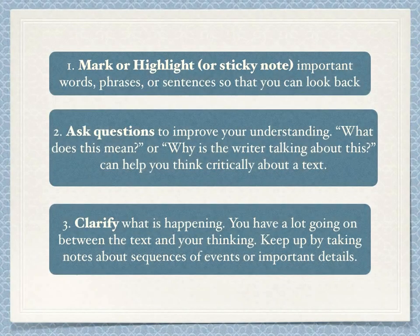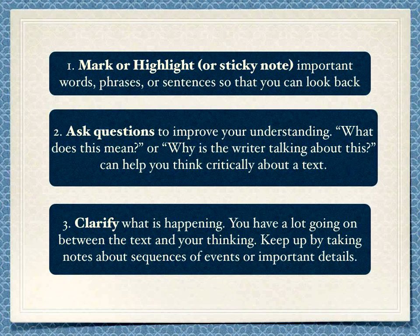There are six strategies to actively read. The first is to mark, highlight, sticky note, or word-process important words, phrases, or sentences so you can look back at them. Two, ask questions to improve your understanding — questions like 'What does this mean?' or 'Why is the author talking about this?' can help you think critically about a text. Three, clarify what is happening. You have a lot going on between the text and your thinking, so keep up by taking notes about the sequence of events or important details.